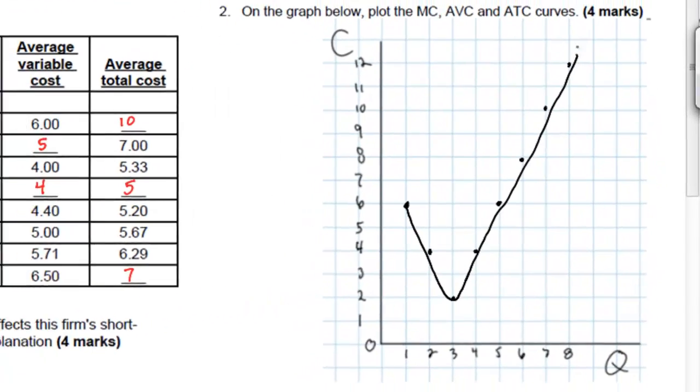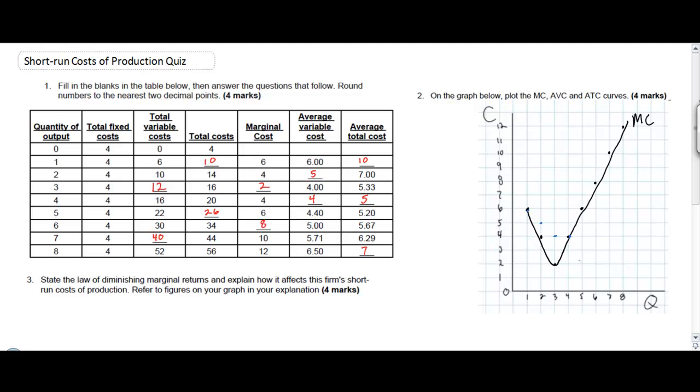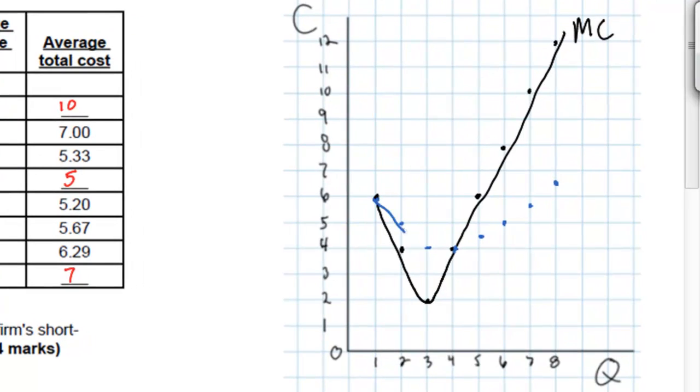First we have the marginal cost curve which as you see slopes downwards and then upwards due to the diminishing returns of our variable resource which is added to a fixed amount of resources.